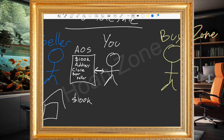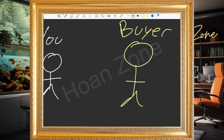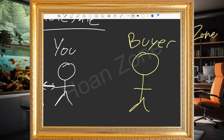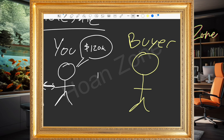Next, you go find a buyer and say, hey, I know you like to invest in this area — I found this property, let me send it to you. They take a look and say, I love it, how much? And you tell them, I would love to sell it to you for $120,000. They agree, and so then you do another contract called an assignment contract.